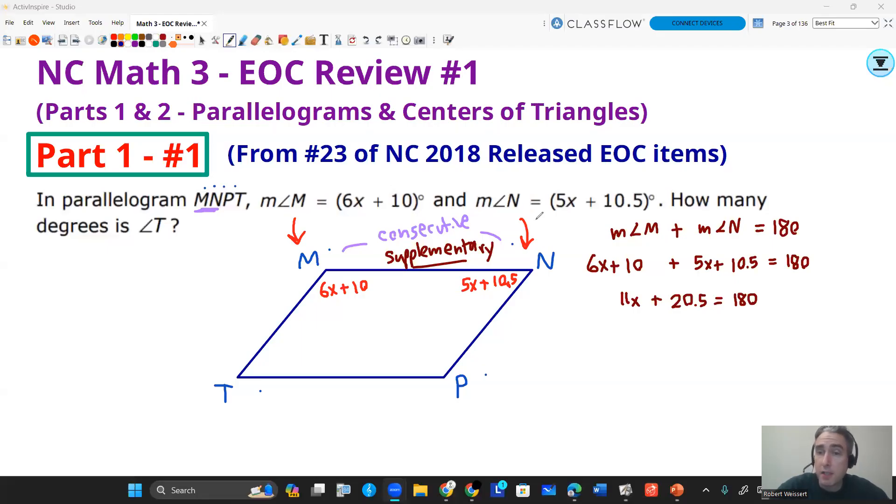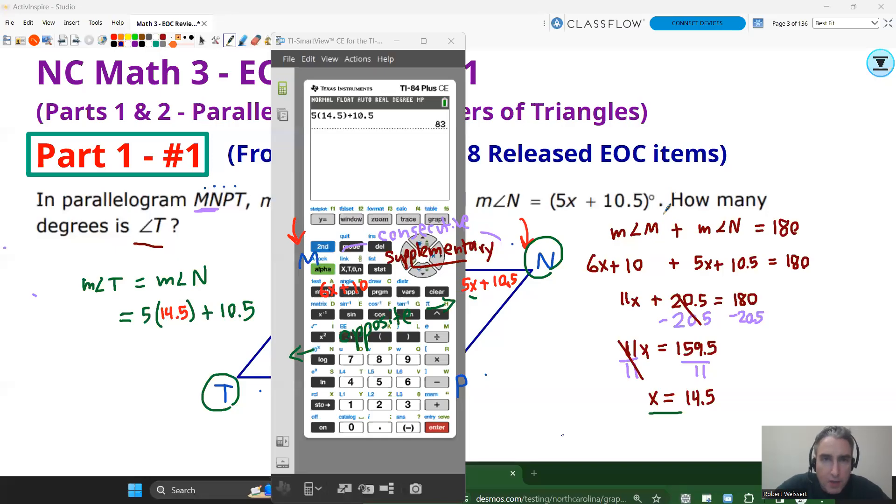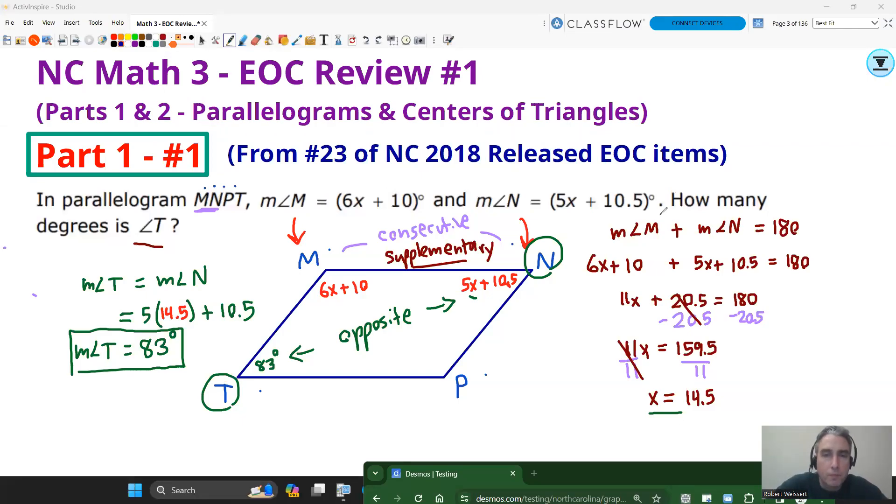Combining like terms on the left side gives us 11x plus 20.5 equals 180. Next, you'll want to subtract the 20.5 from each side. You'll get 159.5. Next, you want to divide by 11 on both sides. Doing so gets you 14.5. Make sure you're using your work, checking your work with the calculator if you need to. From there, you want to know how many degrees is angle T. So we've got to figure out which angle is angle T equal to. Well, we know that opposite angles are congruent. So I can set measure of angle T equal to measure of angle N. So since I want to know the degree measure of angle T, I can plug in the value of x for the expression that's at the measure of angle N and get that degree measure. Let's do that. We're going to double check that with the calculator. As you can see, when you plug in 14.5 into 5x plus 10.5, you get 83. So 83 degrees will be our answer.